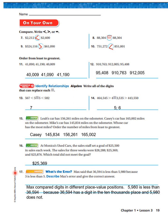What's the error? Max said that 36,594 is less than 5,980 because three is less than five. Describe Max's error. Well, it's easy. Max compared digits in different place value positions. 5,980 is less than 36,594 because 36,594 has a digit in the 10,000 place and 5,980 does not.